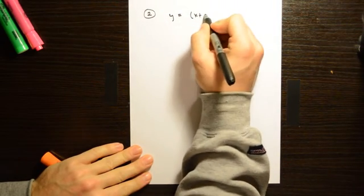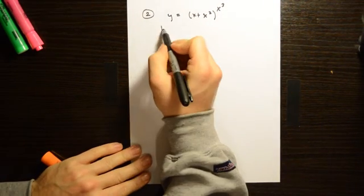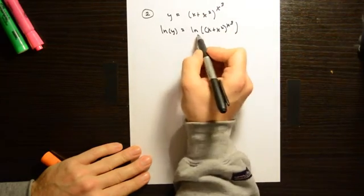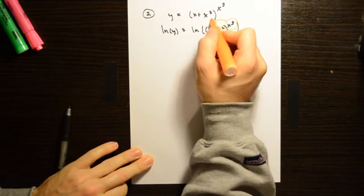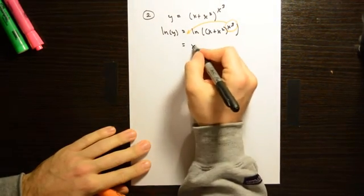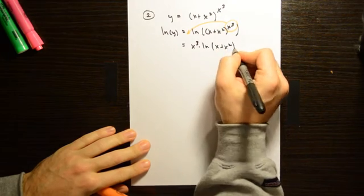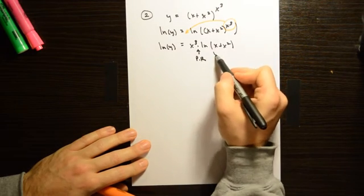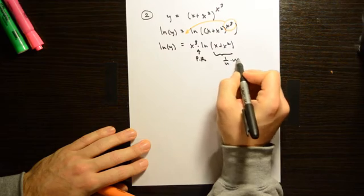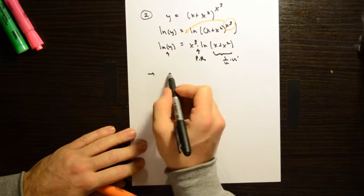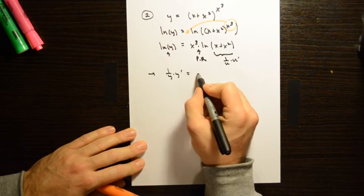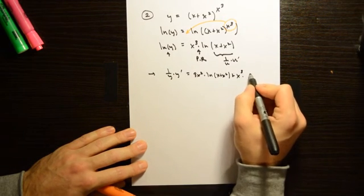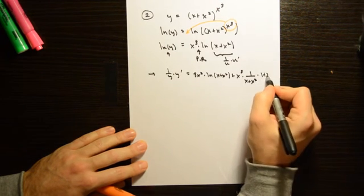In the next problem, we study the quantity (x plus x squared) to the power x cubed. We use the same technique: take the natural log on both sides, giving ln(y) equals ln((x plus x squared) to the x cubed), then bring the exponent down in front to get x cubed times ln(x plus x squared). Taking the derivative with respect to x on both sides gives 1 over y times y prime equals 3x squared times ln(x plus x squared) plus x cubed times 1 over (x plus x squared) times (1 plus 2x).